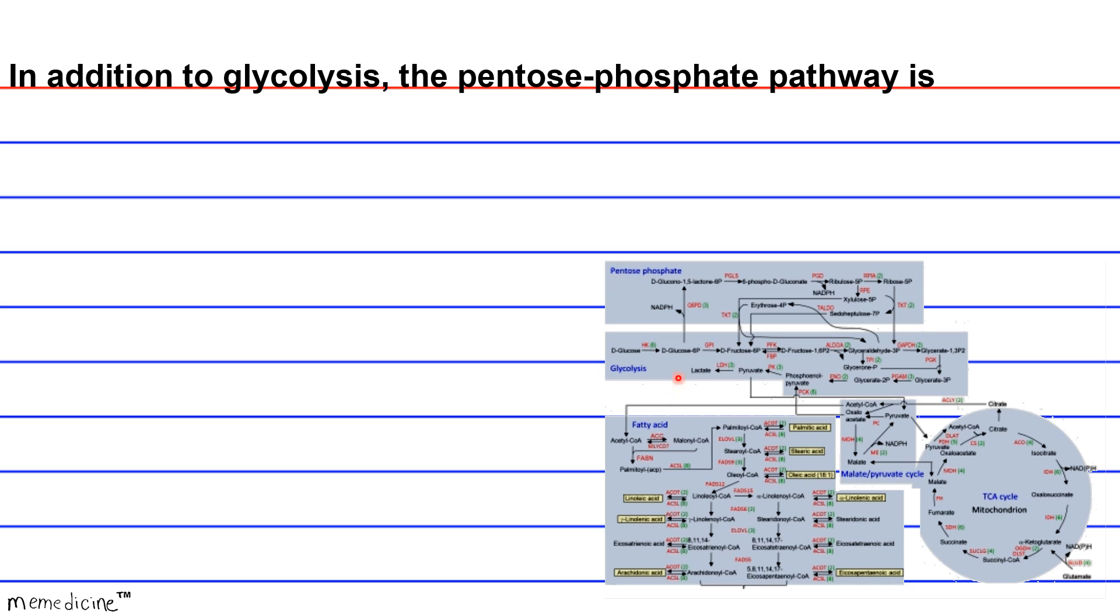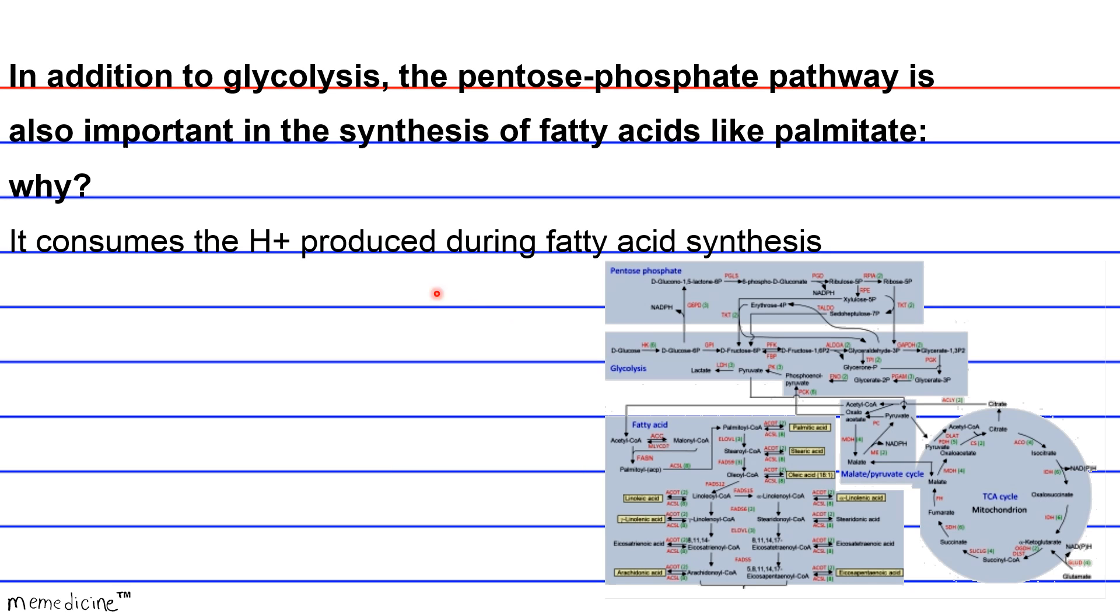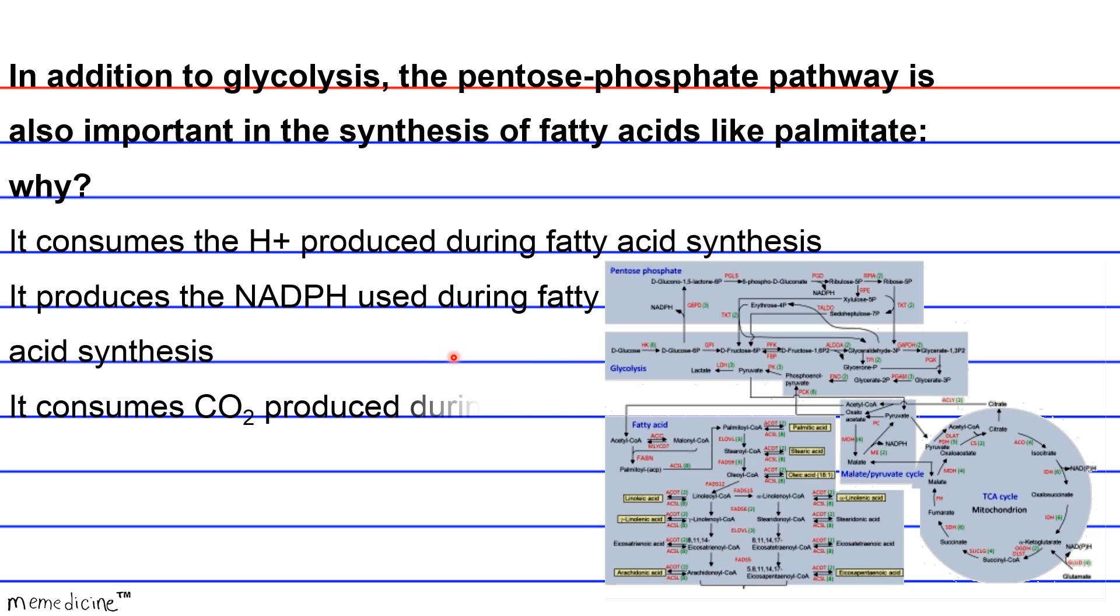In addition to glycolysis, the pentose phosphate pathway is also important for fatty acid synthesis, like palmitate. Why? A: it consumes the hydrogen produced during fatty acid synthesis. B: it produces the NADPH used during fatty acid synthesis. C: it consumes carbon dioxide produced during fatty acid synthesis. Or D: it produces the ATP used during fatty acid synthesis. I'll give you a moment to think. I know this is really tiny. So sorry.